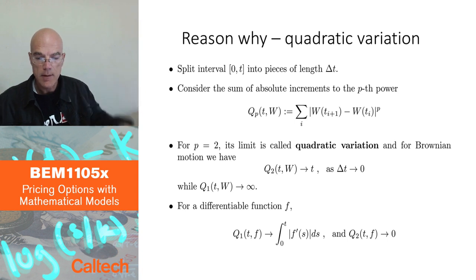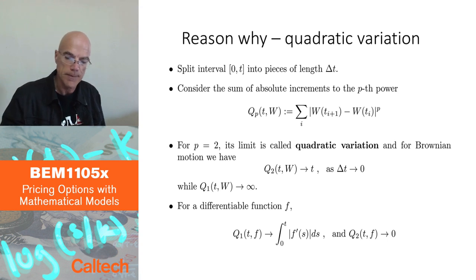This is essentially why we will have this extra second order term when we deal with Brownian motion, which we don't have when we deal with differentiable functions. The fact that these second order variations don't disappear, they don't go to 0 when you add them up over small time intervals and take the limit, they converge to t. That's the essence of that. Let's see how that works for Ito's rule.